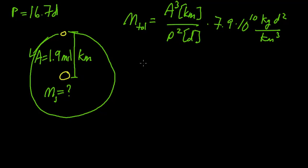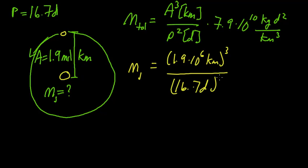Now the mass of Jupiter will be 1.9 times 10 to the 6 kilometers, we cube that, we divide by 16.7 days, we square that, we multiply by the 7.9 times 10 to the 10 kilogram day squared per kilometer cubed.